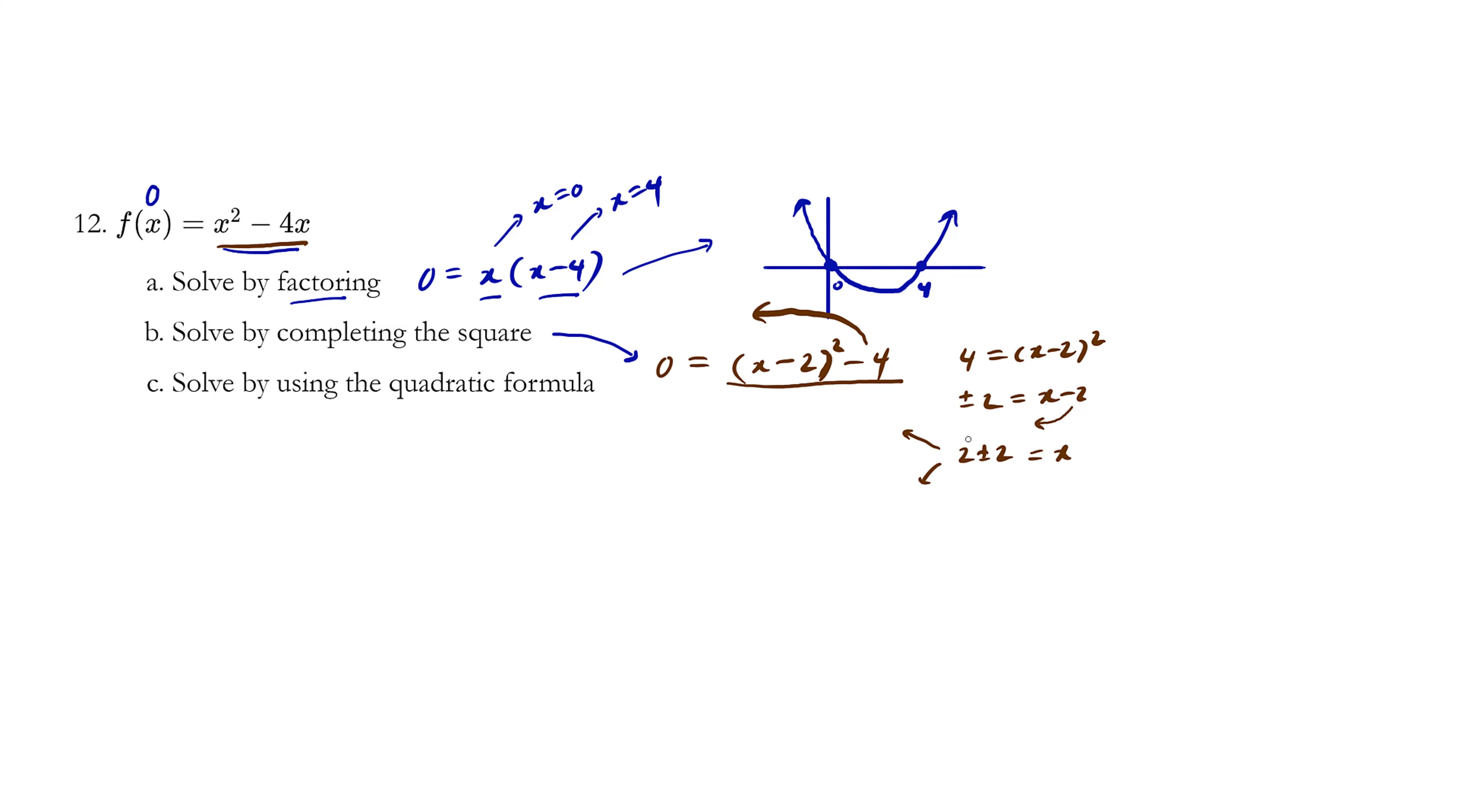So pick your path. If you believe in joining the green lightsaber Jedis, 2 plus 2 is 4. Or if you prefer the coolness of Darth Vader, choose the negative side. 2 minus 2 is 0. So these are the two correct answers.